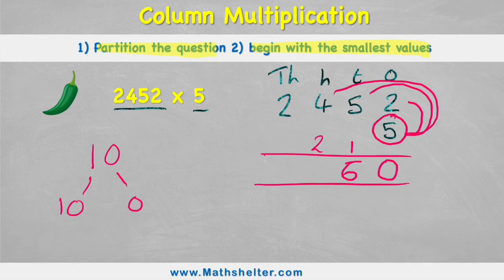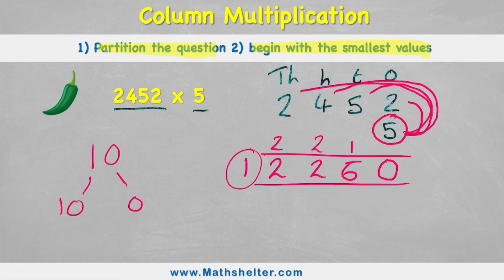Now I have five times four. Five times four is 20, plus my two is 22. And finally, five times two is 10, plus my two is 12. I have nowhere else to go, so my one and two can just come into the answer row.